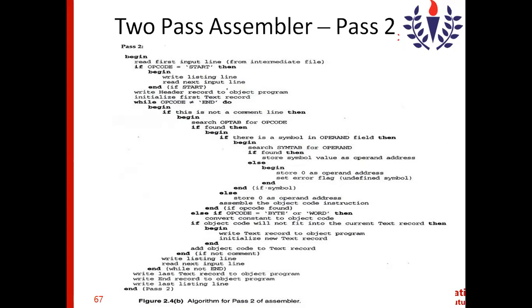Once the op code is found in the op table, the next step is determining the address of the symbol. If there is a symbol in the operand field — for example, STL RETADR, where STL has a corresponding value of 14 and RETADR is a symbol in the operand field — then the assembler searches the symbol table for the operand.